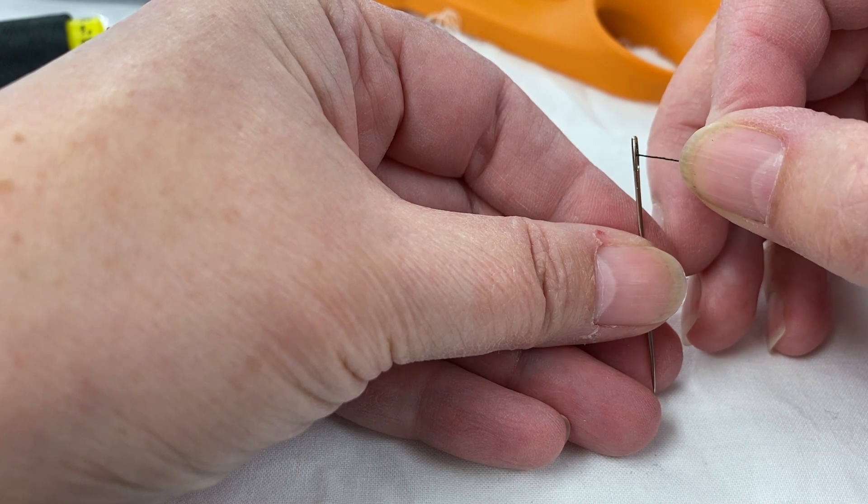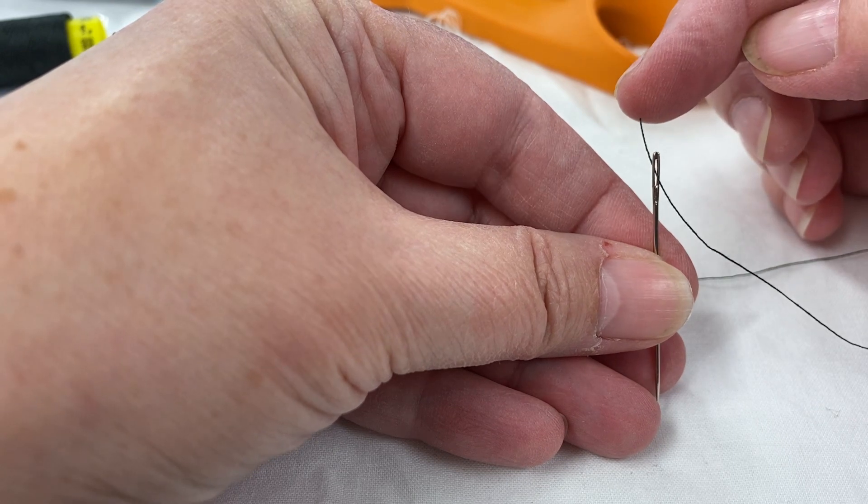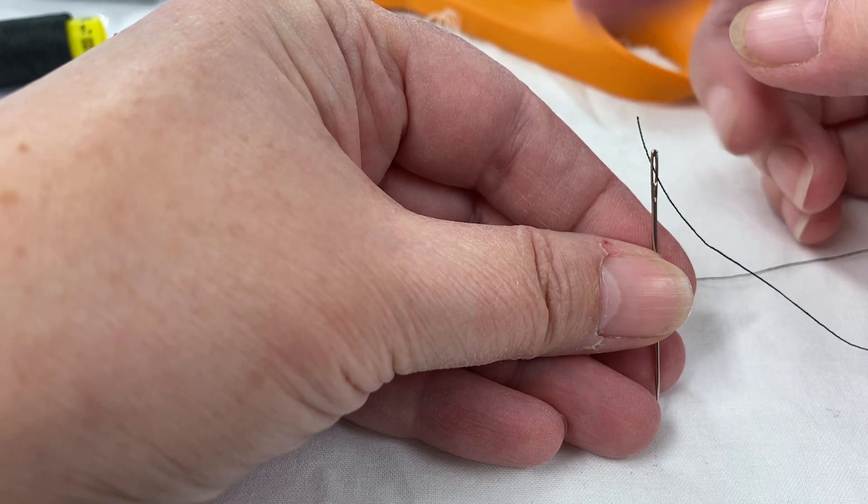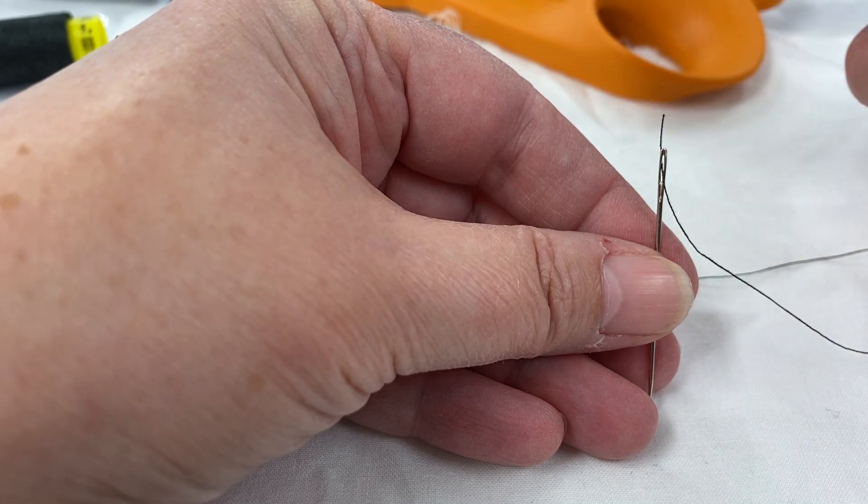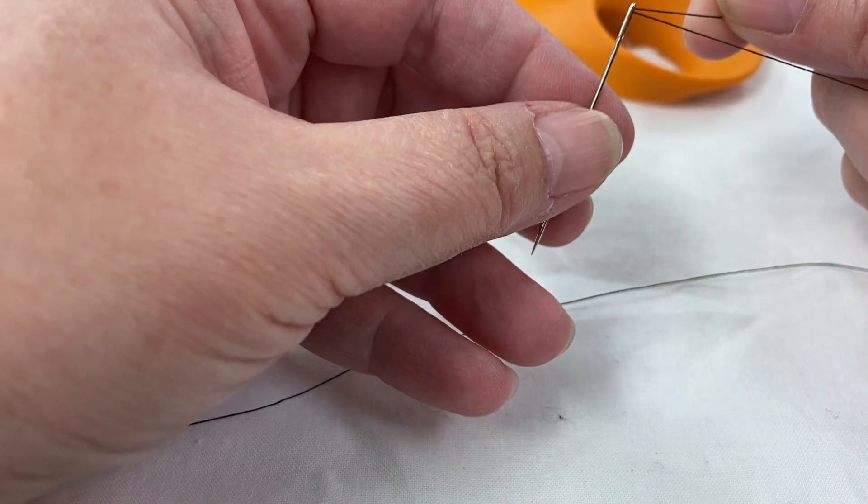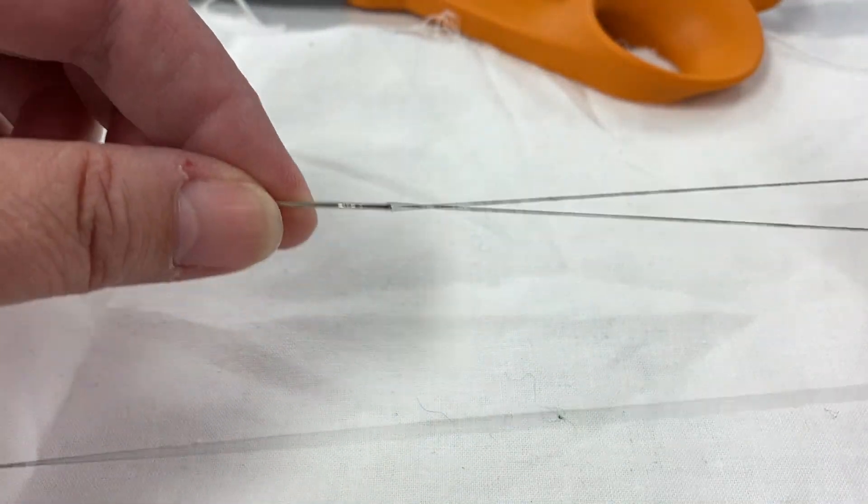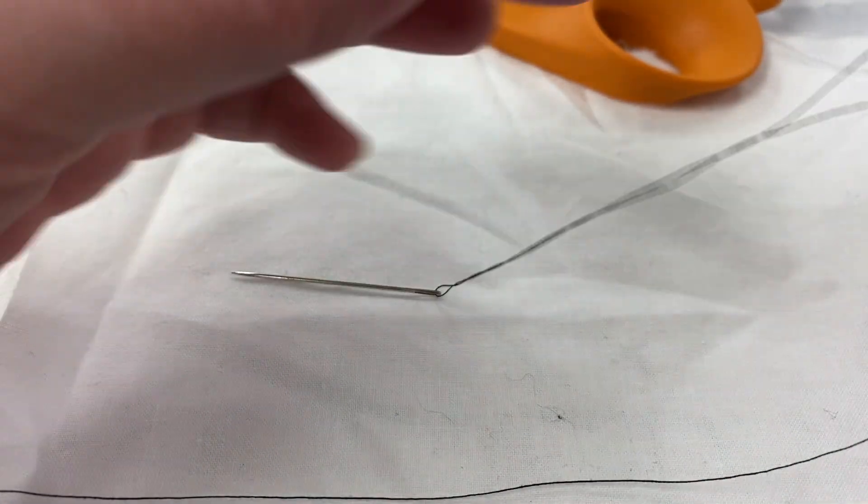And then what we want to do is put the end of the thread through the needle. If you're having trouble doing that, sometimes the end of the thread gets fuzzy and it makes it harder to thread, so clip a little bit off of it and sharpen that edge up. We're gonna leave this loose and the needle's just kind of hanging out here.